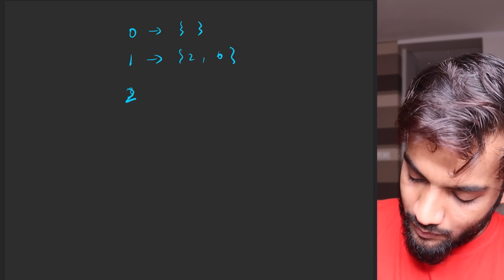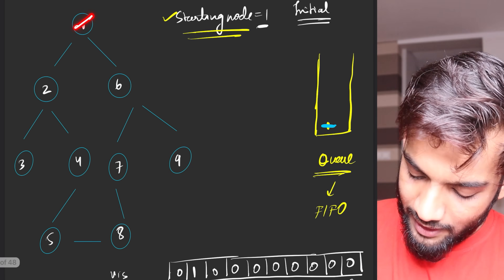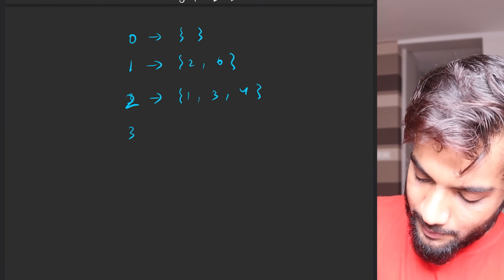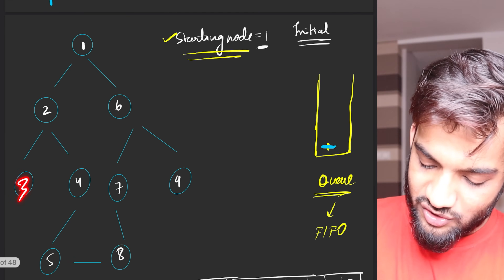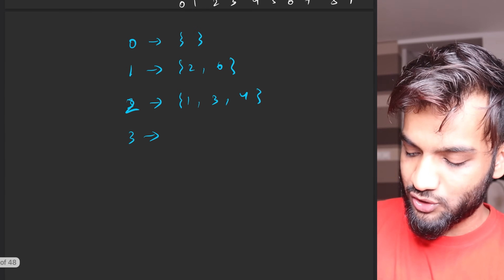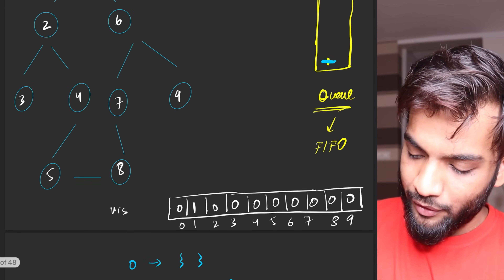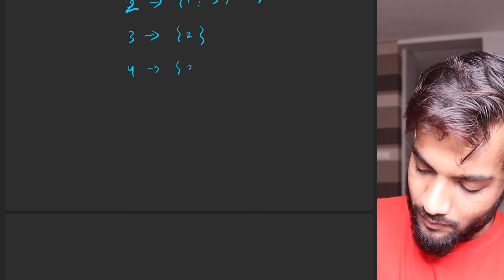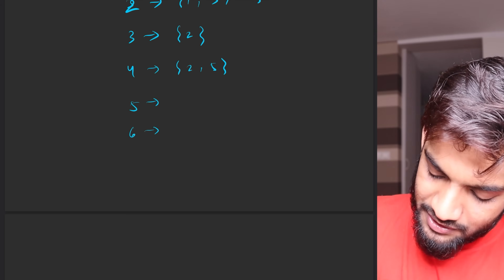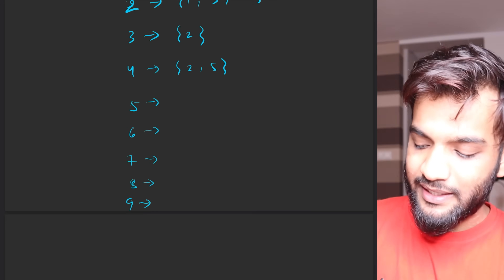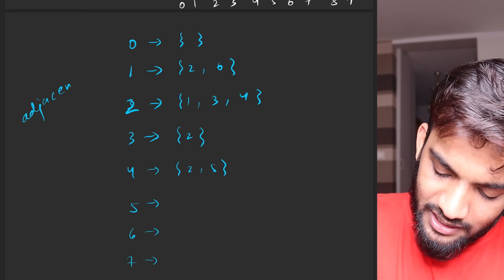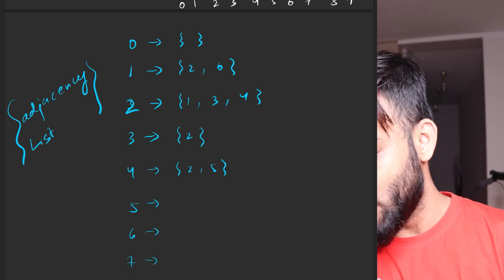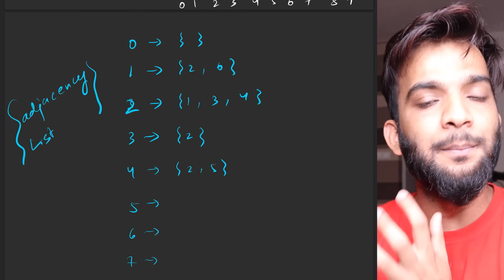Let's construct the adjacency list for this graph. For node zero it is empty. For node one it stores two and six. For node two it stores one, three, and four. For node three it just stores two. For node four it stores two and five. Similarly construct the rest of the adjacency list for nodes five, six, seven, and eight as taught in the second video.